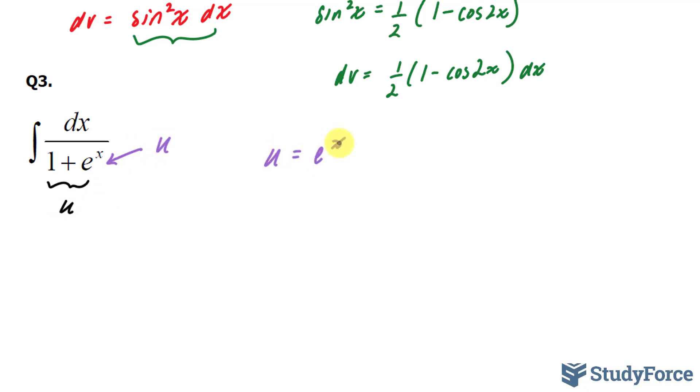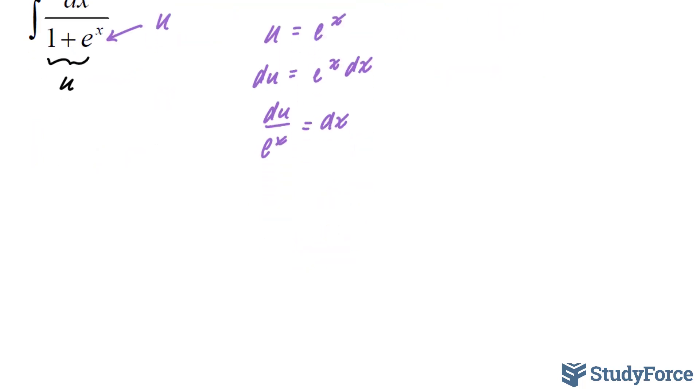u is equal to e to the power of x, taking the derivative, we end up with du is equal to e to the power of x dx. I'm going to substitute this u with this e x and at the same time solve for dx. And if I do that, I end up with du over e to the power of x is equal to dx. This gives me the integral of 1 over 1 plus u and dx becomes du over e to the power of x. Also recall that I set u equal to e to the power of x, so I can replace this with u, giving me the integral of 1 over 1 plus u times u du.